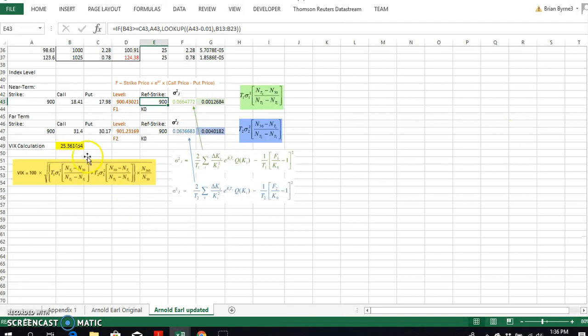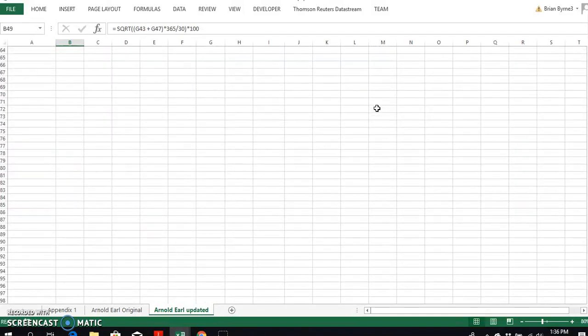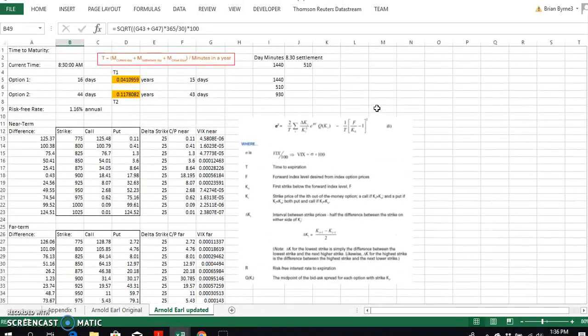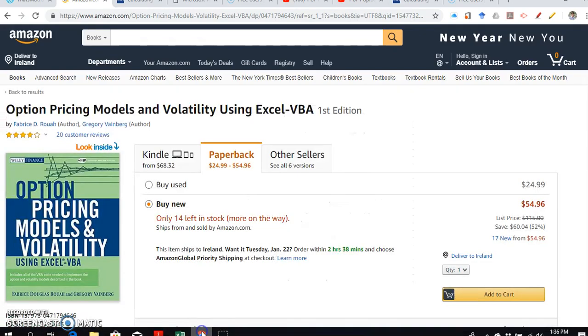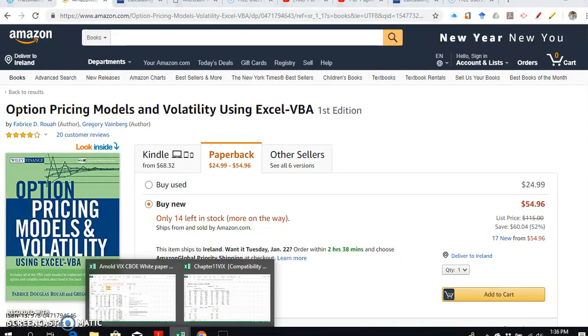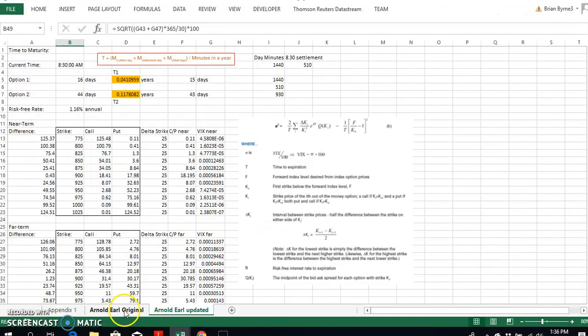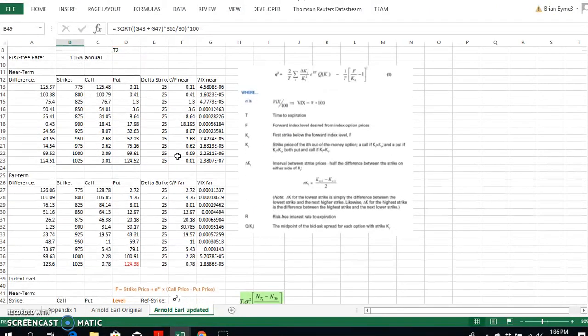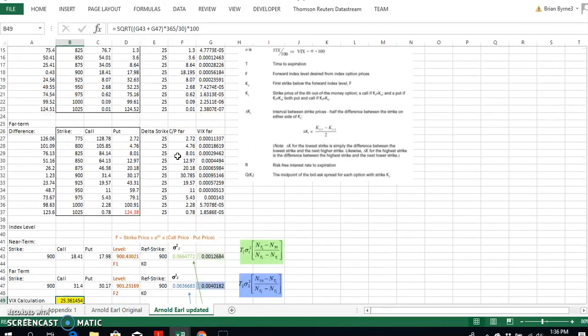So I'm relatively comfortable that the estimation that we have here with 25.36 is fine and that it's correct. The difference here between Arnold and Earl compared to the textbook is this textbook uses VBA, whereas the advantage of using Arnold and Earl is it's purely Excel-based, and in that sense it's more easily tractable from the respect of the user.